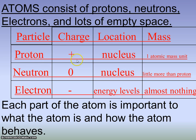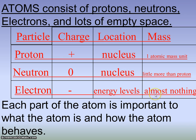A proton has a positive charge and is located in the nucleus — it is one atomic mass unit. The atomic mass unit was designed specifically to talk about the mass of the parts of an atom. A neutron is also in the nucleus, has a neutral charge, and its mass is a little more than a proton. The electron has a negative charge and orbits the nucleus in energy levels or orbitals, and it has a mass of almost nothing — electrons are very, very tiny with almost no mass at all.